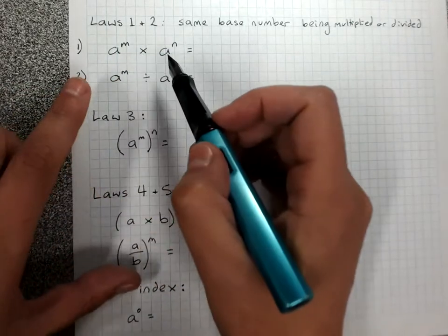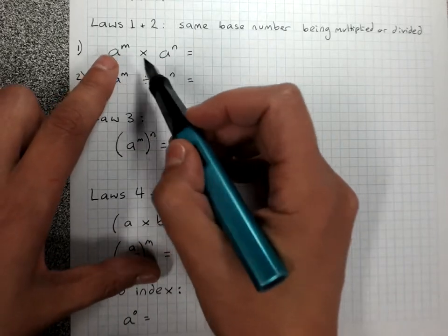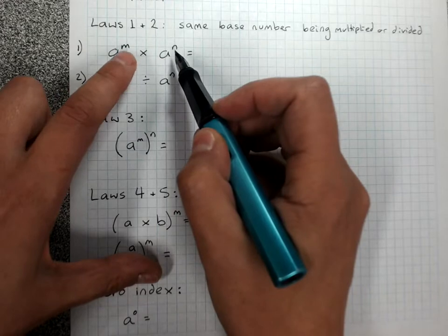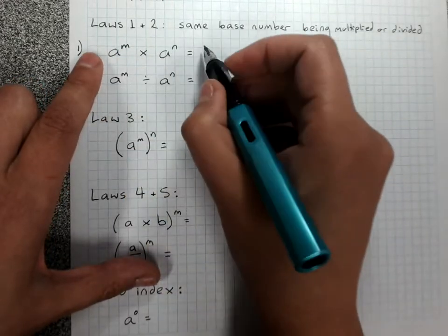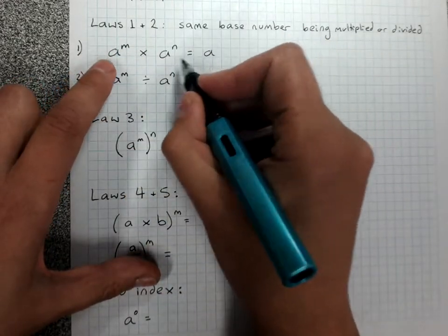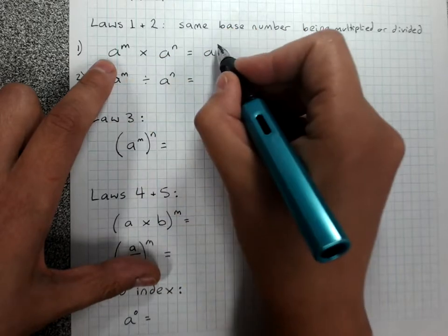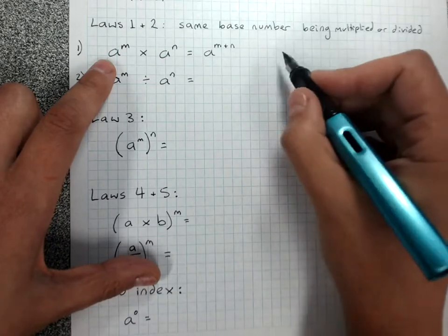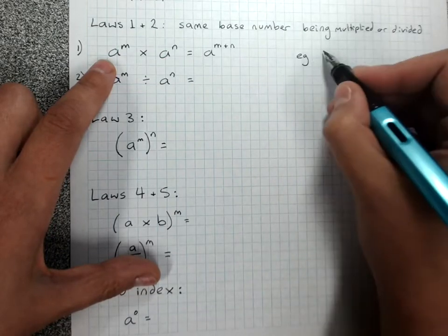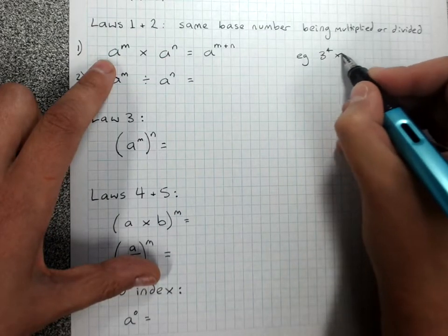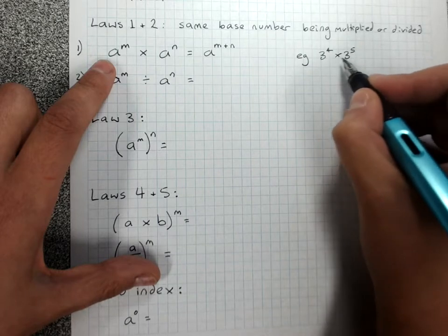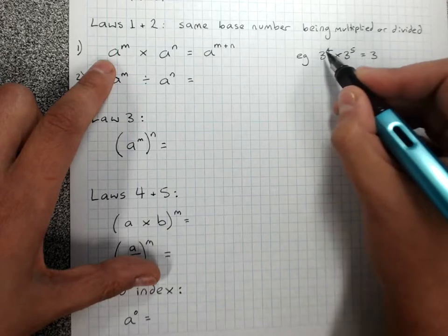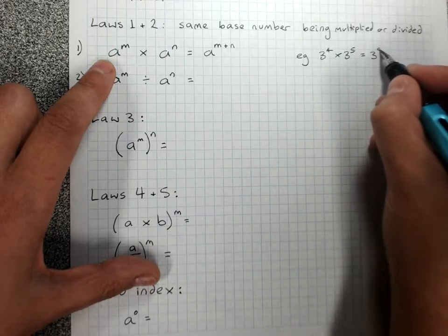The rule that gives us the shortcut: when I'm multiplying two powers with the same base, I add the indices. We keep the same base number and the power will be m plus n. For example, 3 to the 4 times 3 to the 5 — same base number — same base number in my answer, add the powers: 4 plus 5 is 9.